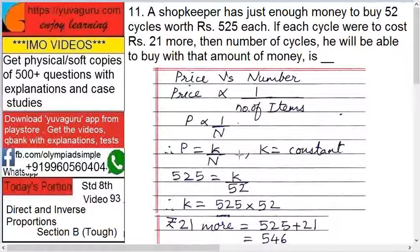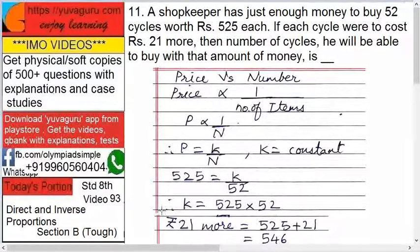P equals K upon n, therefore K is constant. So 525 equals K upon 52, which means K equals 52 into 525. That is the value of K — you don't need to calculate the exact answer for K just yet.